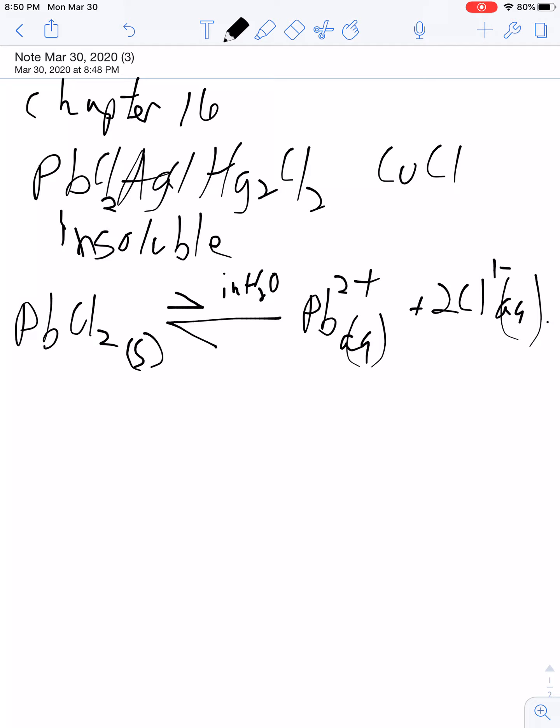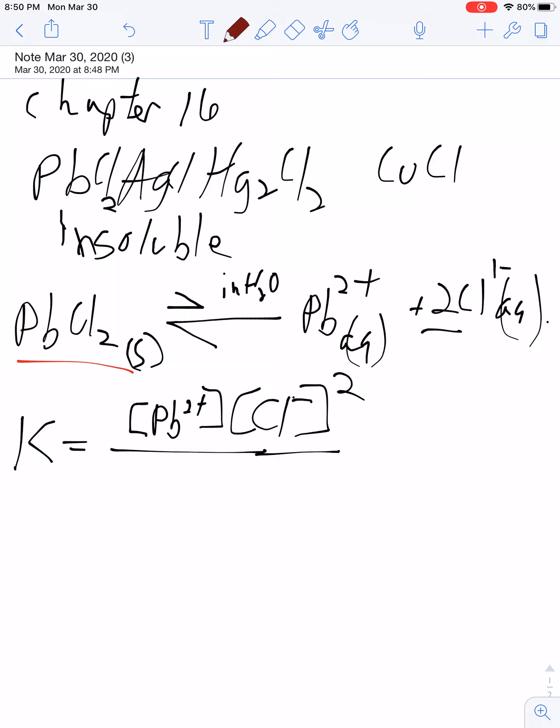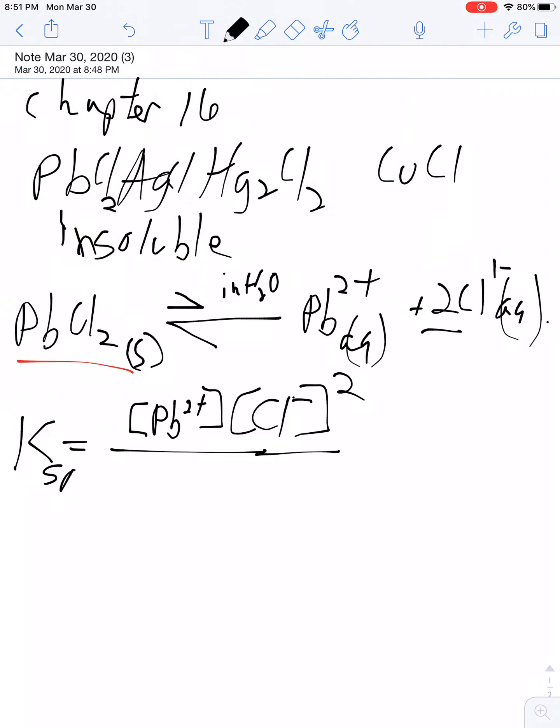When we do equilibrium, we do products over reactants raised to their power. Remember that we do not include solids or liquids, so the lead chloride doesn't appear in the reaction. Only things that are aqueous. We give a name to this - instead of K, we call it Ksp for solubility product. K is just the equilibrium constant. It doesn't matter if it's Ka or Kb or Kw or Keq or Ksp, it's the same thing.